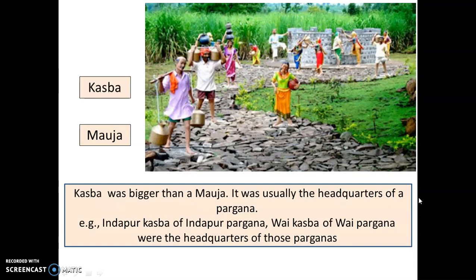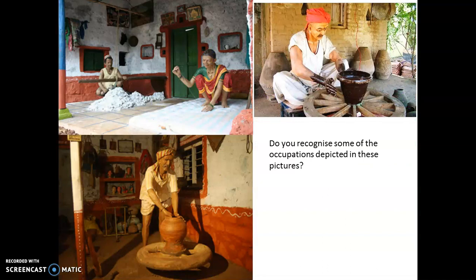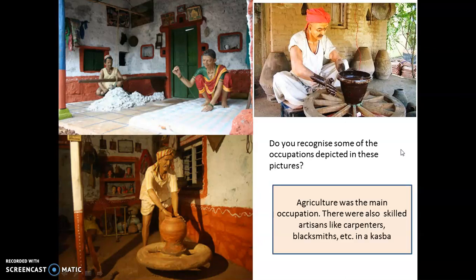A village a little bigger than a Mauja was called as a Kasba — the Kasba is like today's towns. The Kasba was usually the headquarters of the Pargana, and a Pargana was something like a district, just as we have the district of Palghar where we live. Here are more pictures of artisans: the top left shows a man with a loom — that is a weaver. The other pictures show men with a wheel making pots — those are potters. Though agriculture was the main occupation, the village also had many skilled artisans found both in the Mauja and in the Kasba.